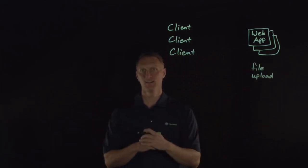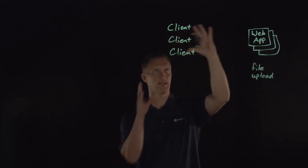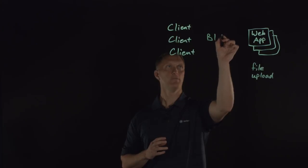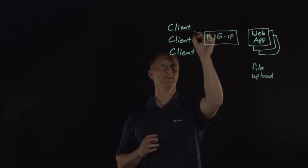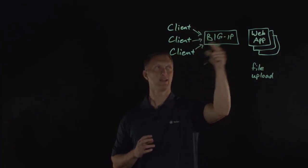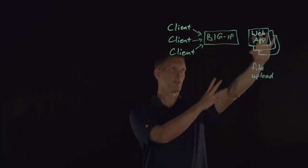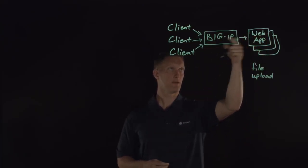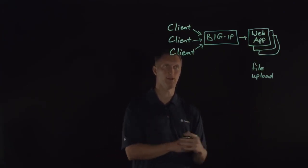Of course, being an F5 customer, what are you going to put between your clients and your web application? You're going to put a BIG-IP. These clients, as they access your web application, will actually hit the BIG-IP virtual server, which then interacts directly with the back-end web servers.